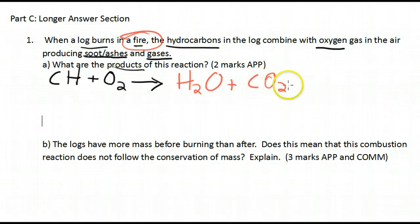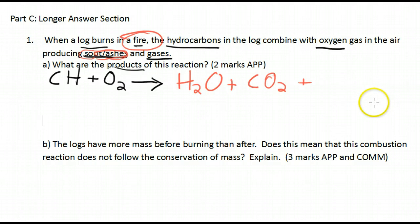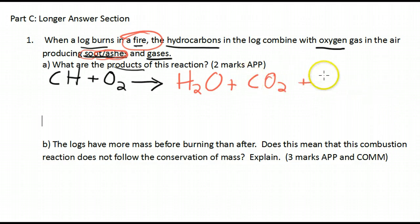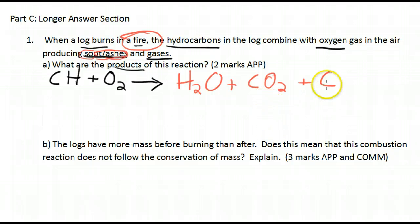The question also hints that something else is produced — soot and ashes. In class I held a fire to a test tube and you could see water droplets form, but it also made a black soot. That black soot is just carbon. So we call this incomplete combustion because it doesn't produce only gases — it also makes a solid, which is carbon. Those are the products of this reaction.